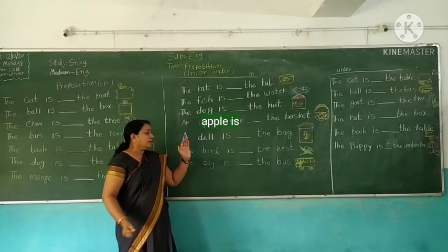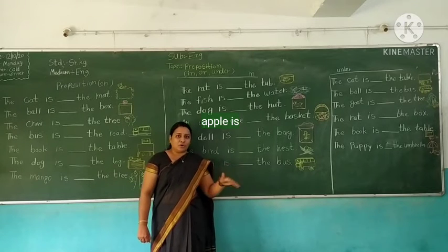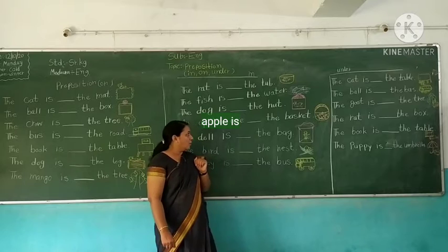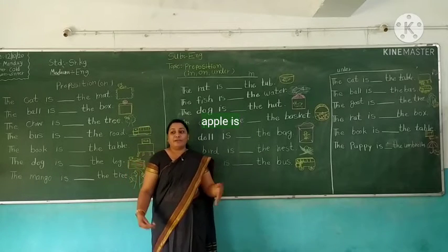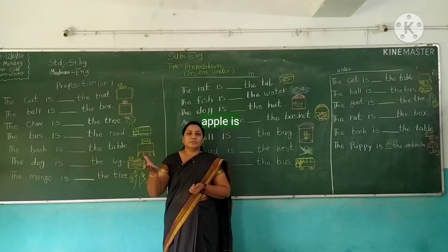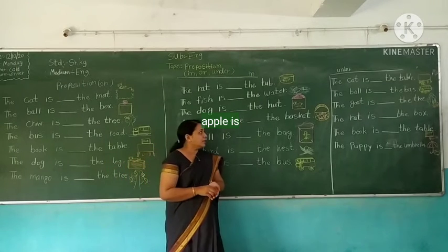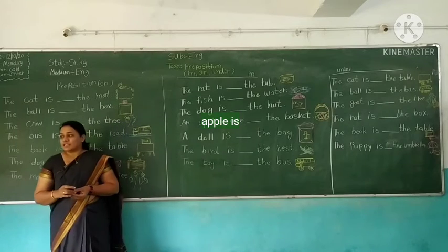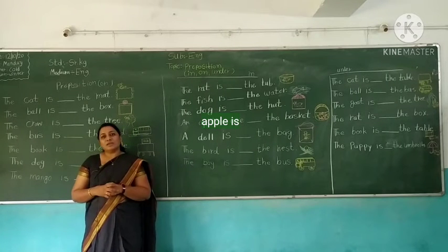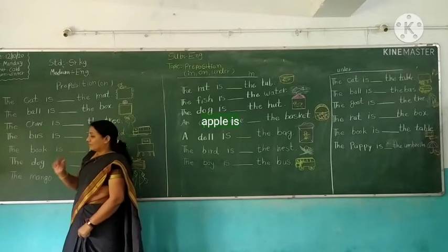The doll is in the bag. If you have a doll, where is it? The doll is in your bag. So we write: a doll is in the bag. And apples are in the basket — the apples are in the basket. The pen is on the book, your pencil is on the book. So children, whenever we explain and identify a particular place, condition, or position, we use preposition words: in, on, and under.